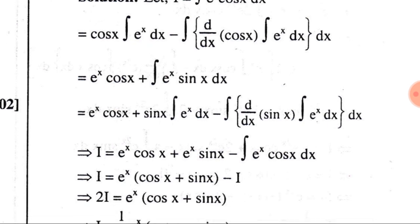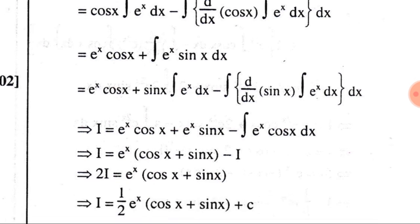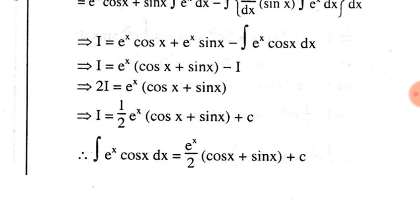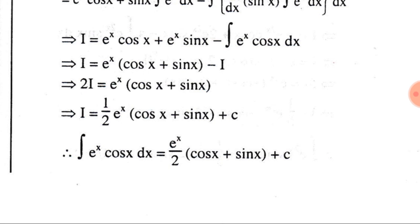Applying IBP again to ∫eˣ·sin(x) dx: sin(x)·eˣ − ∫cos(x)·eˣ dx. Substituting back, I = eˣ·cos(x) + eˣ·sin(x) − I. So 2I = eˣ(cos(x) + sin(x)), giving I = (eˣ/2)(cos(x) + sin(x)) + C. That means ∫eˣ·cos(x) dx = eˣ(cos(x) + sin(x))/2 + C.